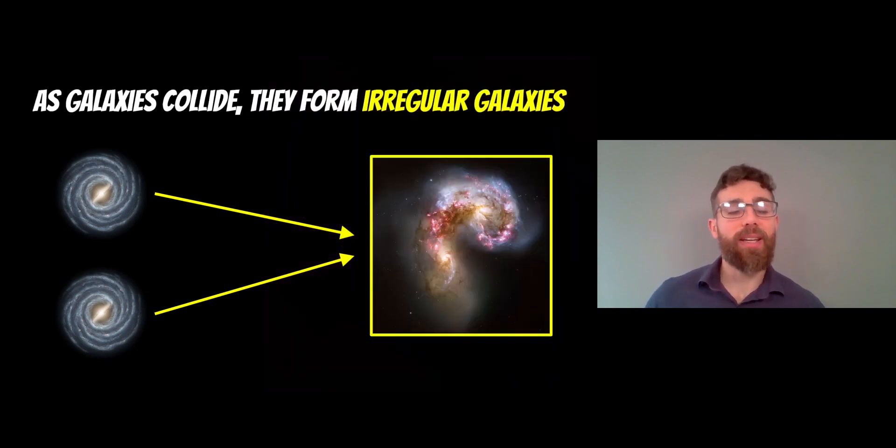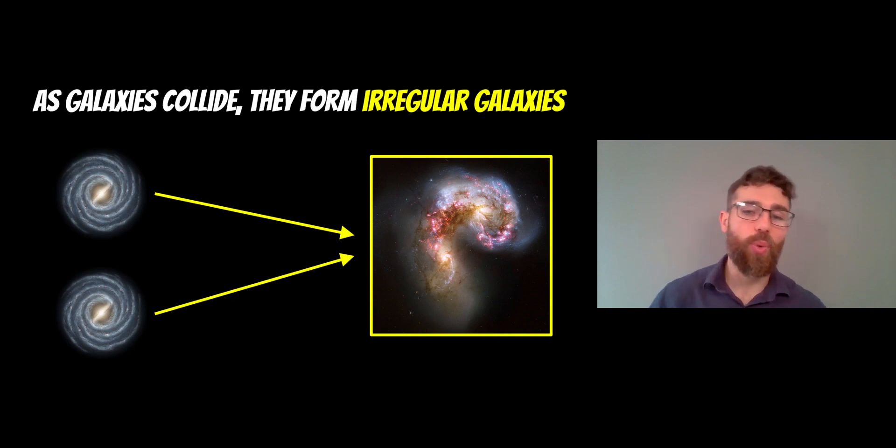But as the galaxies collide, there's a kind of an intermediary stage where you get irregular galaxies. So these are galaxies that are tidally distorted. They are twisted. They have unusual shapes. And these are known as irregular galaxies. And you can see an example there.